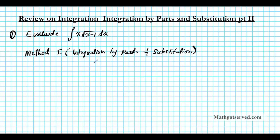So let's go ahead and do this using Method 1: integration by parts. Let's write down the formula to refresh our memory. The formula for integration by parts is the integral of u dv equals uv minus the integral of v du. Looking at this integral, we're going to call u equal to x, and dv is going to be the square root of x minus 1 dx.